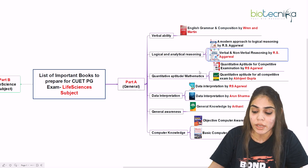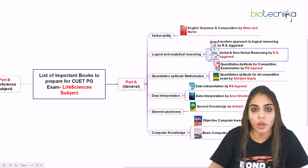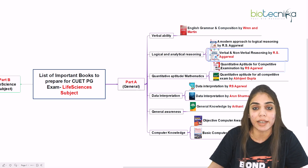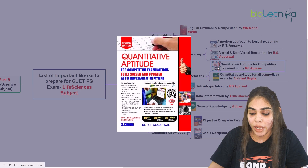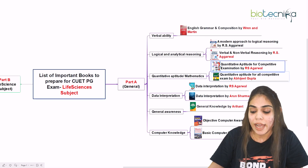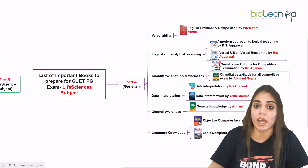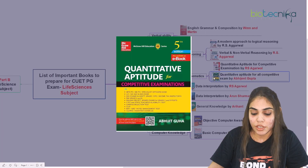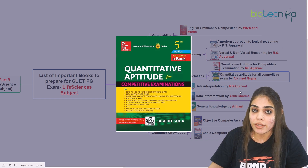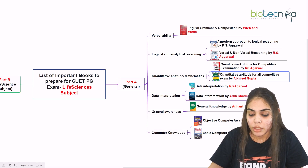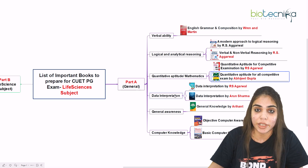The third section is quantitative aptitude, where you have to cover the mathematics part. For this, you can go for Quantitative Aptitude for Competitive Examinations by RS Agarwal, or the second option is Quantitative Aptitude for All Competitive Exams by Abhijit Gupta. There are two choices, so you can go for either of these books.